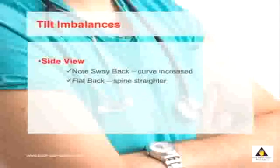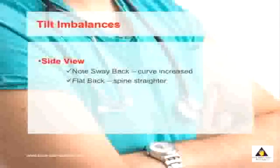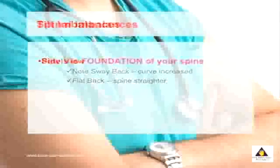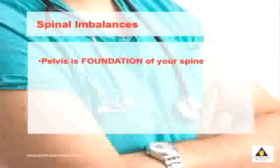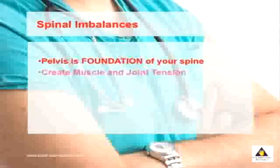You can also look at the side view of your posture, and this detects what's called a tilt type imbalance, where you can have a sway back where the curve in your lower back is a lot greater, or you may have a flattened spine. The pelvis is the foundation of your spine, and imbalances centered around here can create pain throughout your spine, causing both muscle as well as joint tension.